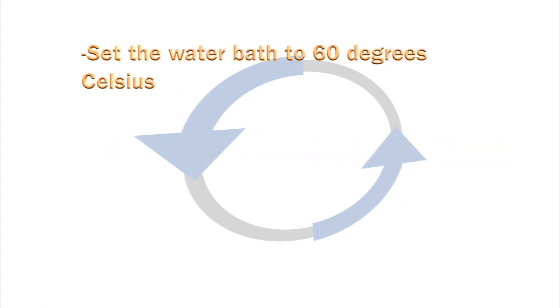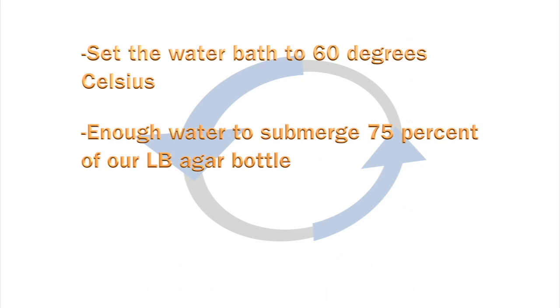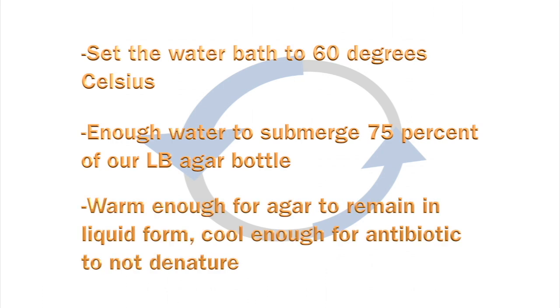We next set a water bath to 60 degrees Celsius, making sure that the water bath has enough water to submerge about 75% of our molten LB agar bottle. We will cool the LB agar mix in the water bath once the autoclave cycle is complete. 60 degrees Celsius is a good temperature because it's warm enough for the LB agar to remain in liquid form, yet cool enough that most antibiotics will not denature.